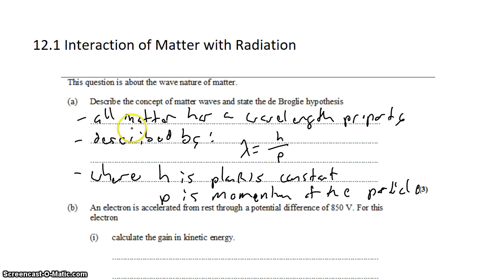De Broglie hypothesis: all matter has a wavelength property described by lambda equals h over p, where h is Planck's constant and p is the momentum of the particle.